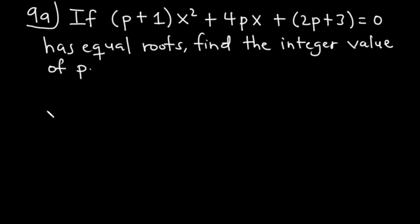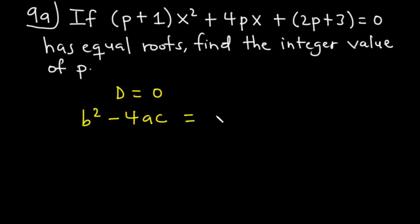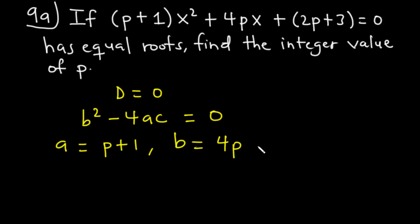For a quadratic equation to have equal roots, the discriminant d must equal 0. D is given by b² - 4ac = 0. According to the equation, a = p+1, b = 4p, and c = 2p+3.